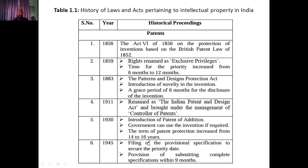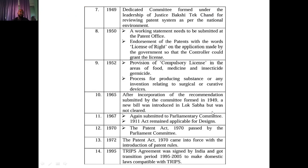The term of patent protection was increased from 14 to 16 years in 1930. In 1945, filing of a provisional specification to secure the priority date was established, and the provision for submitting the complete specification within nine months was set. In 1949, the first amendment after independence formed dedicated committees under Justice Bakshi Tek Chand to revive the patent system as per the national environment. In 1950, working statements needed to be submitted at the patent office and endorsement of patents with licenses was introduced.